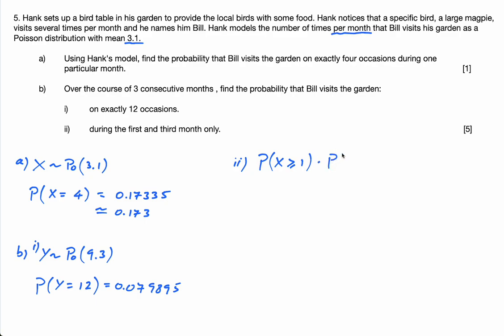Times the probability that X equals 0. Because the second month, he's not going to come. So he comes at least once, he doesn't come, and then the third month, again, he comes at least once. So that's what we're doing.